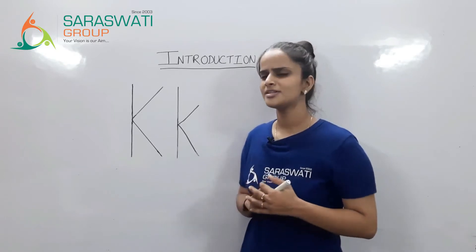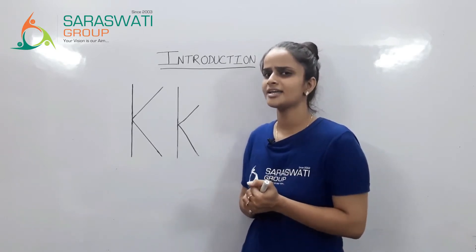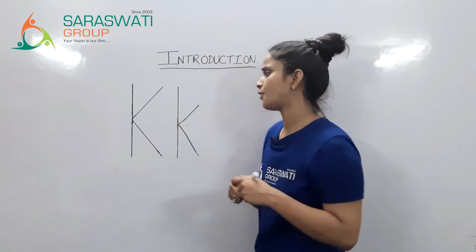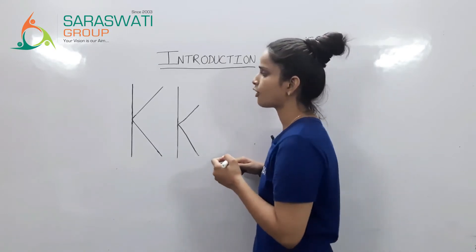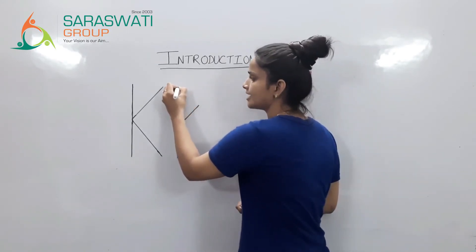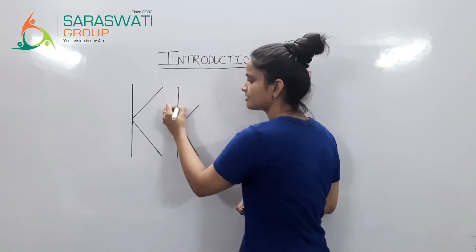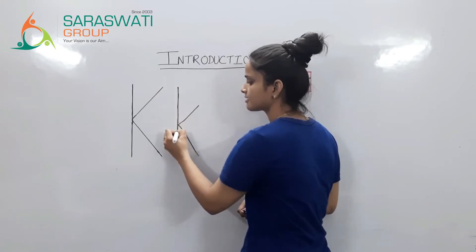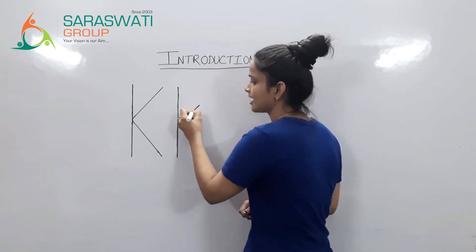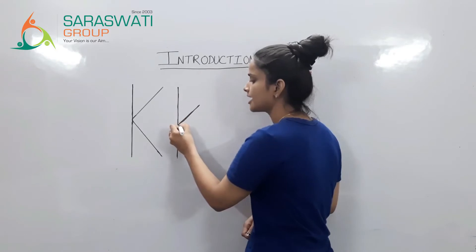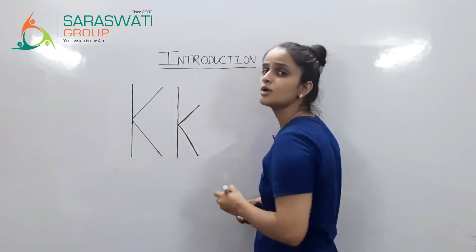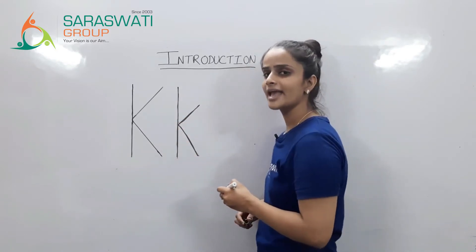So, do you know its formation? First of all, we have to do the standing line, then small slant line and again slant line — lowercase k.